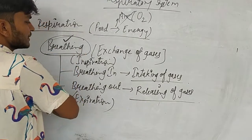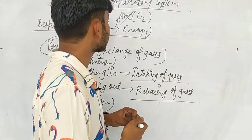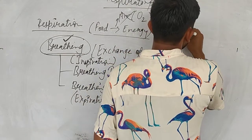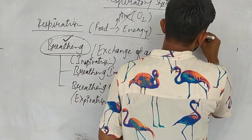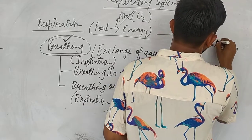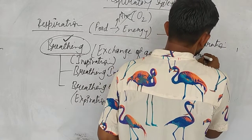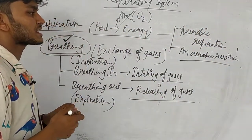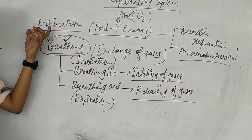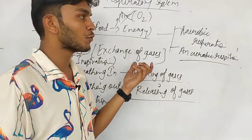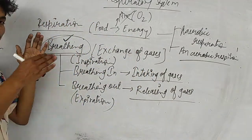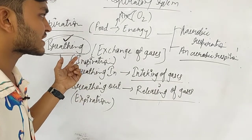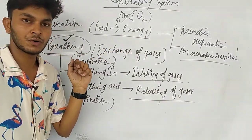In respiration, we have seen one very important thing: breathing. After breathing, we will talk about the types of respiration. Respiration generally has two types: number one is aerobic respiration, and number two is anaerobic respiration. Respiration means oxidation of food — food converting into energy. Breathing is of two kinds: breathing in and breathing out. In the next lecture, we will talk about the kinds of respiration. Thanks, have a nice day.